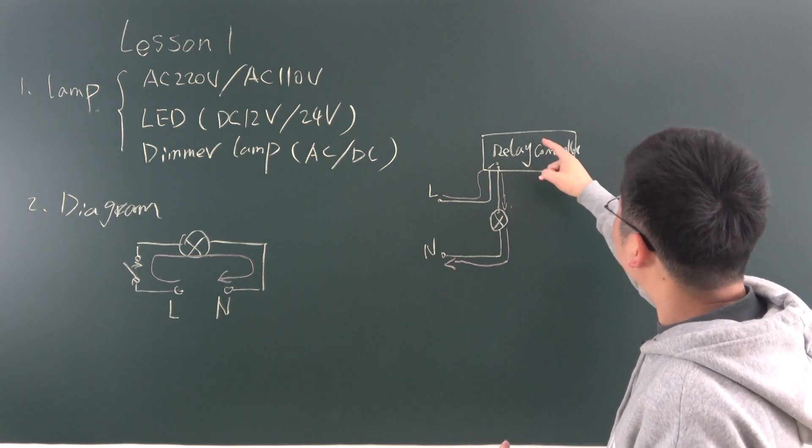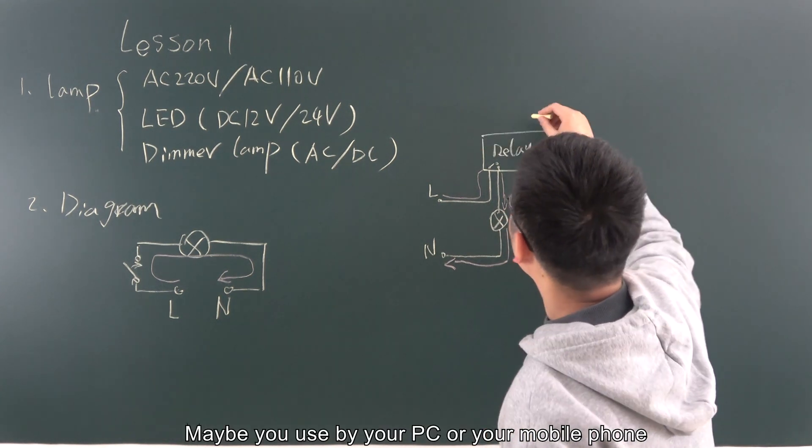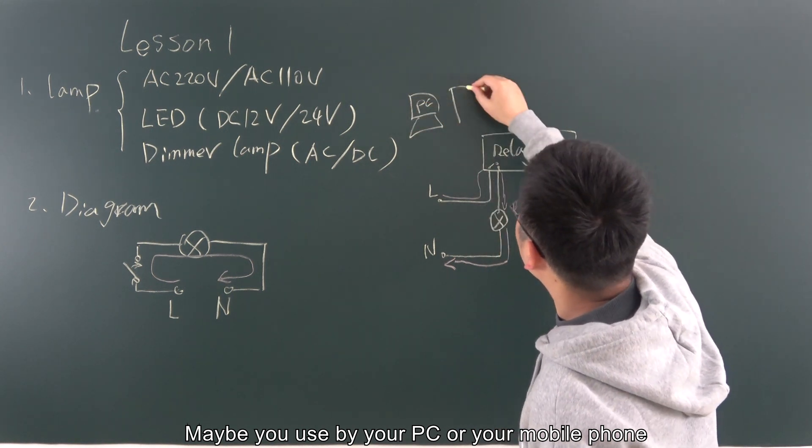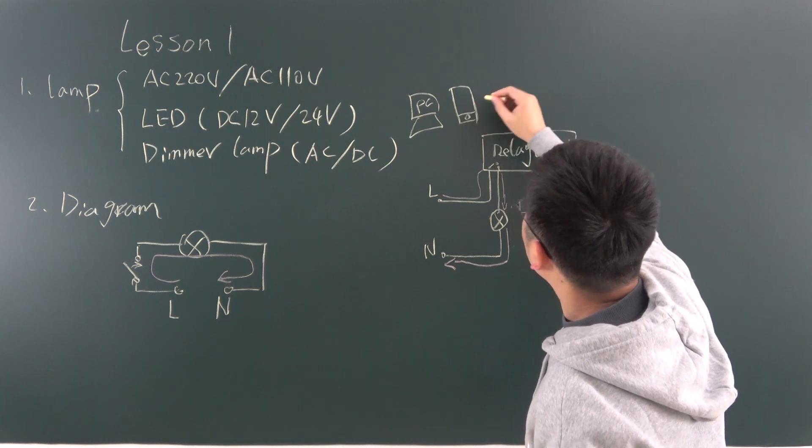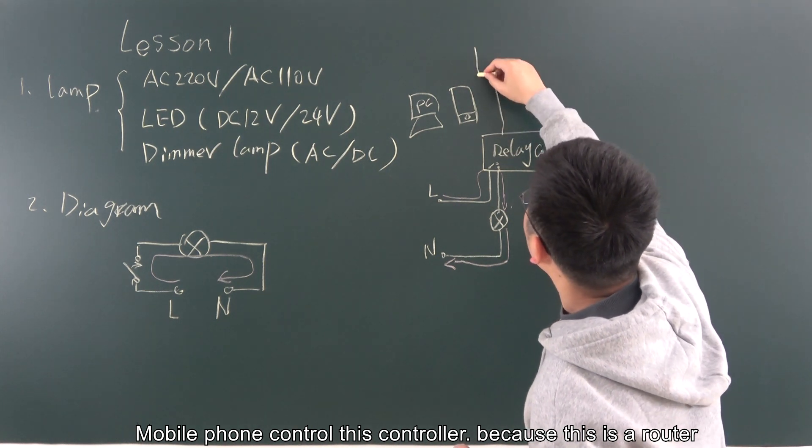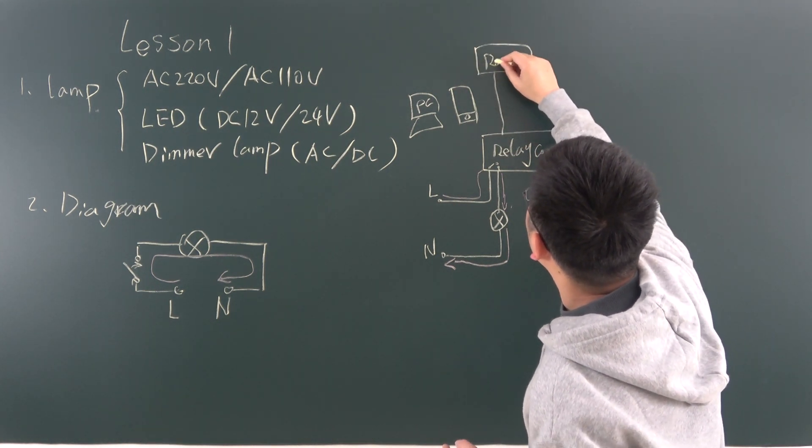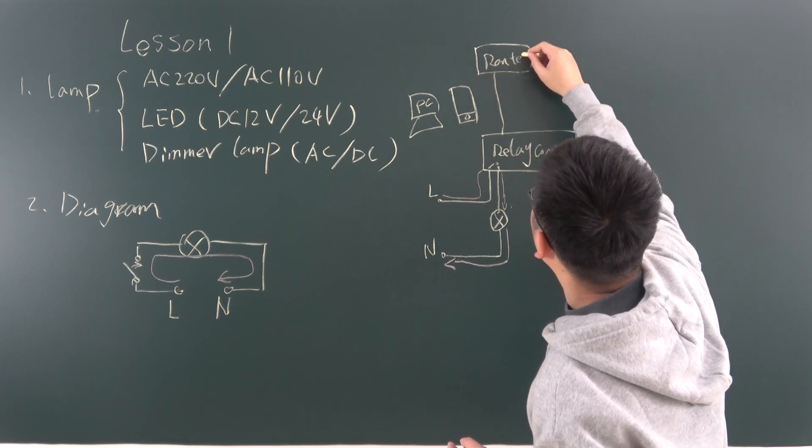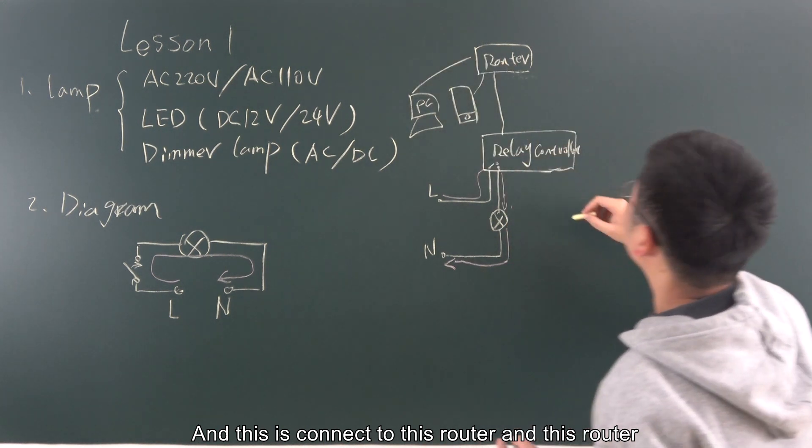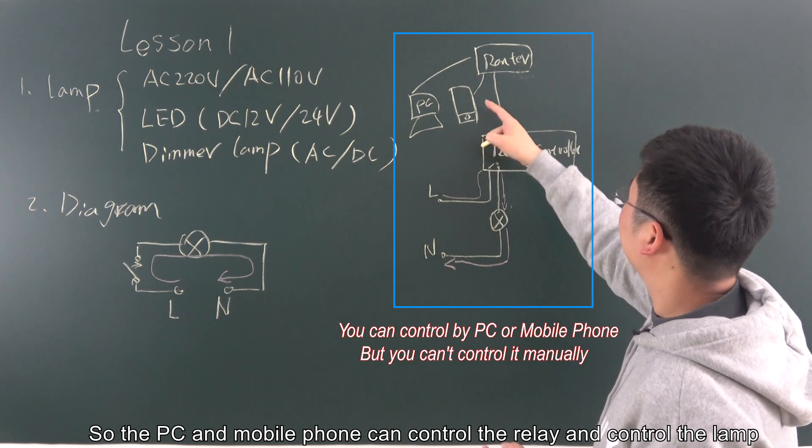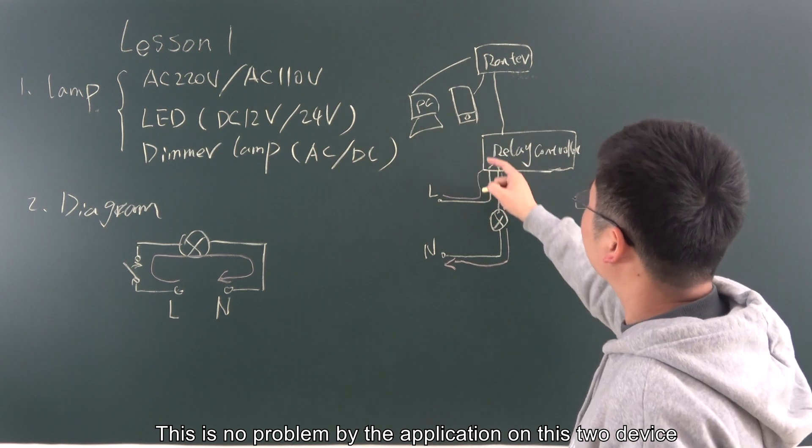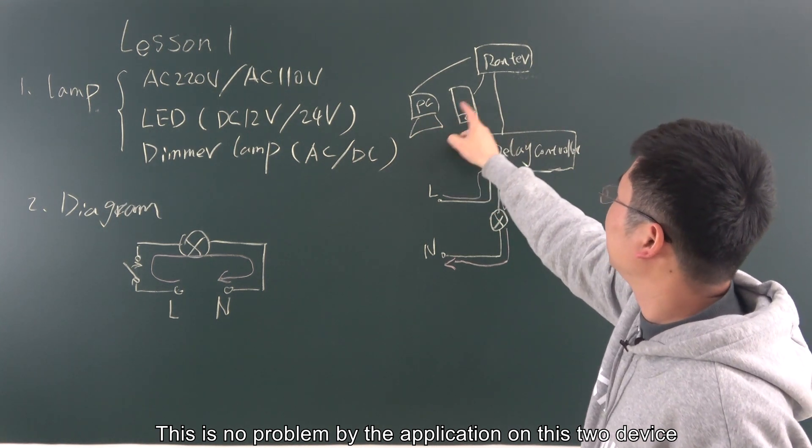This can be used by, maybe you use by your PC or your mobile phone. Mobile phone controls this controller. Because this is the load and this is connected to this load. So the PC and the mobile phone can control the relay, and it can control the lamp. This is no problem by the application on these two devices.